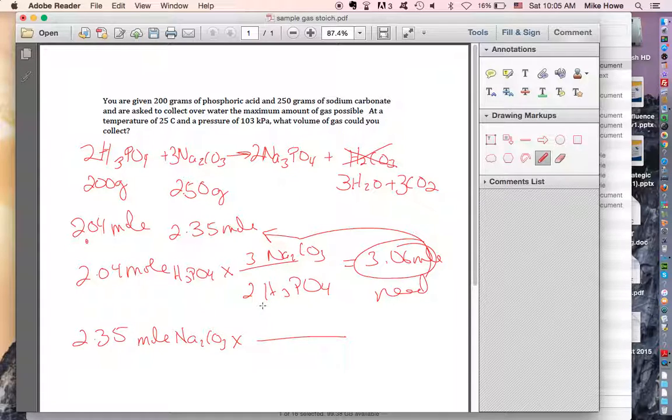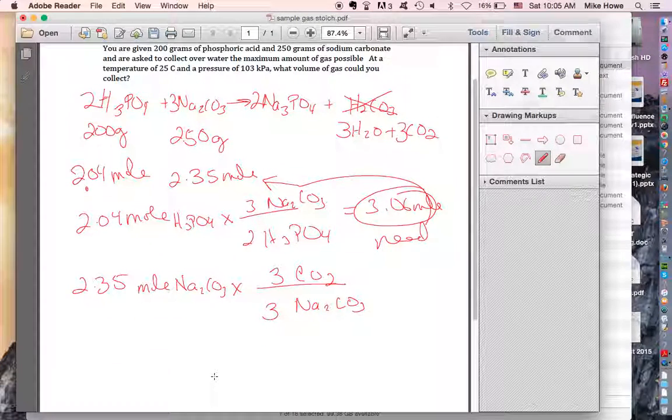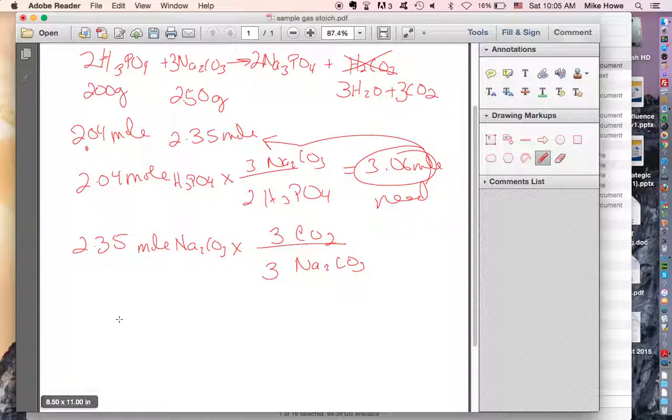And the question asked about the gas, what volume of gas you could collect. So what we're going to need to do is find the moles of carbon dioxide. So we're going to have sodium carbonate on the bottom and carbon dioxide on the top. And that's a 3 to 3 ratio. So it just turns out we'd have 2.35 moles of carbon dioxide.